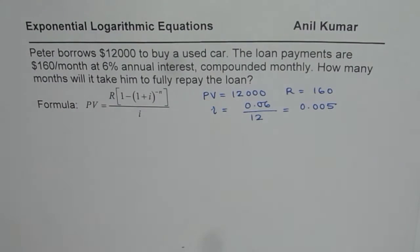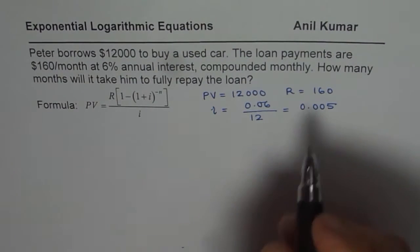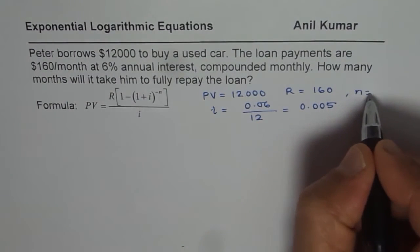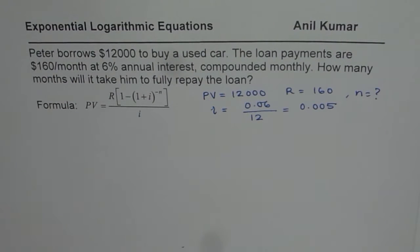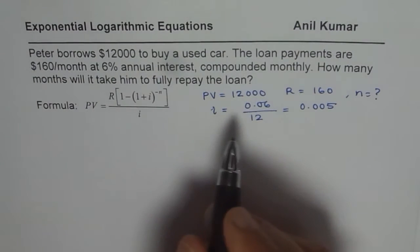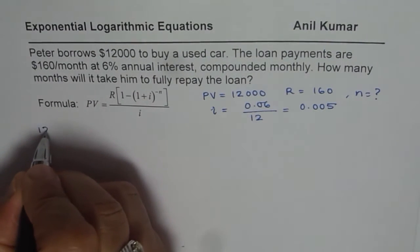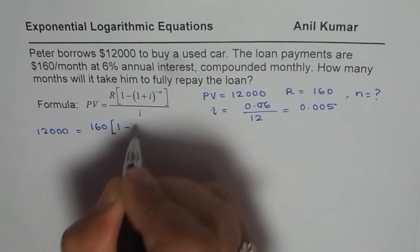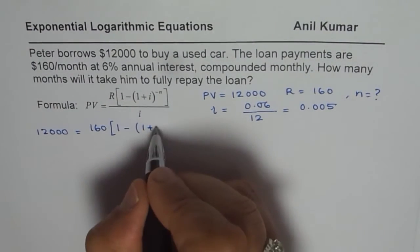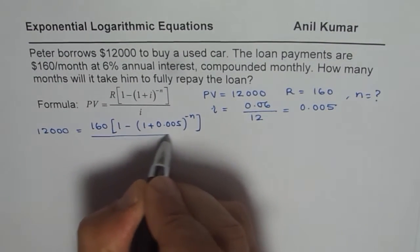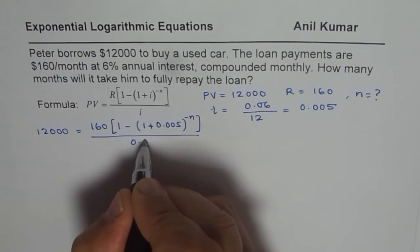It is good to use the decimal values here. We know all these values, so in this formula we need to find the value of N — the number of months of installments to pay. Let's substitute these values: 12,000 equals 160 times, in brackets, 1 minus (1 plus 0.005) to the power of minus N, close bracket, divided by 0.005.